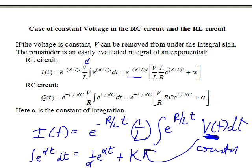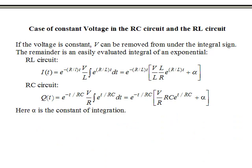In this case alpha is R over L, so you get L over R from carrying out that integration. I'm using alpha for the constant of integration — I don't want to use C because C is capacitance. For the RC circuit with constant voltage, V comes out from under the integral sign, and integrating E to the t over RC dt gives RC times E to the t over RC, plus alpha.